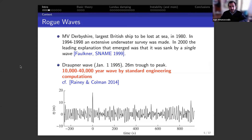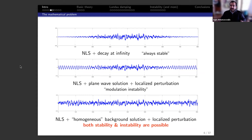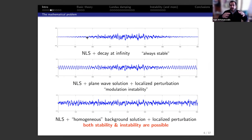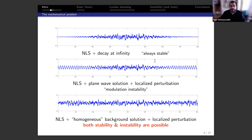Let me state the mathematical problem more clearly. When people say cubic NLS, they often imagine it with boundary conditions at infinity of decay — an Lᵖ function as initial condition that decays at infinity. In that case there is nothing unstable; you can quantify everything, you have scattering, dispersion — nothing unstable. A more interesting version is an exact plane wave solution for NLS with a localized perturbation on top.